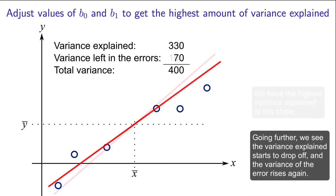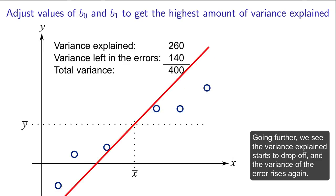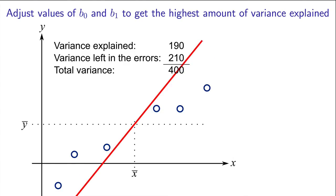Now what we have to ask ourselves is how much variability was explained in the data with that additional slope term? And then how much variability is left over in the errors? This is what this video is about, quantifying the variability explained by the model and quantifying how much variability is left over in the errors.